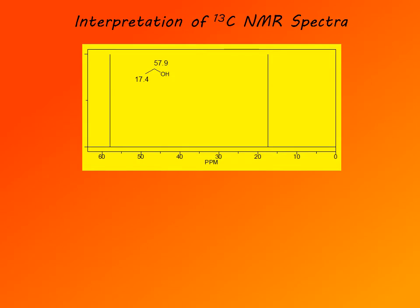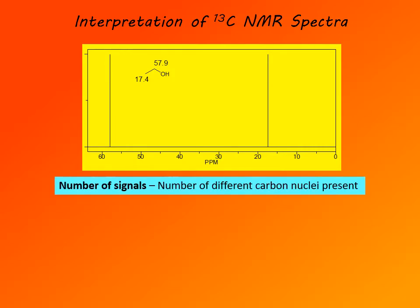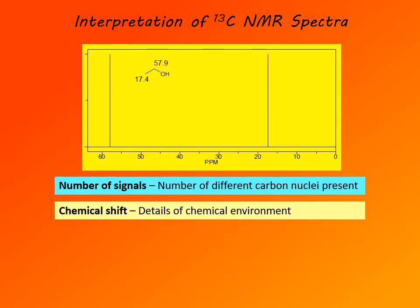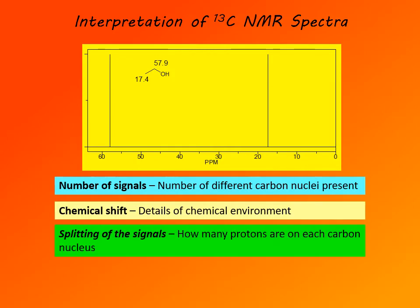Here is the carbon-13 NMR spectrum of ethanol. As you can see, there are two carbons in ethanol and two signals in the carbon-13 NMR spectrum, as expected. From a carbon-13 NMR spectrum, the number of signals gives us the number of different carbon nuclei present in a molecule. Chemical shift gives details of their chemical environment. And splitting of signals — which we may occasionally observe depending on the conditions under which the spectrum is taken — may tell us how many protons are present on each carbon nucleus.